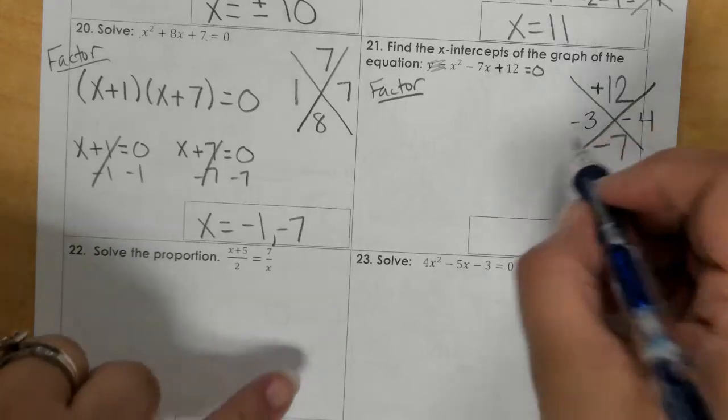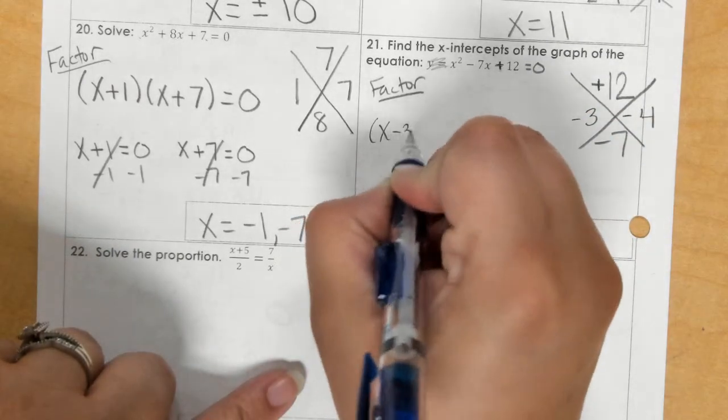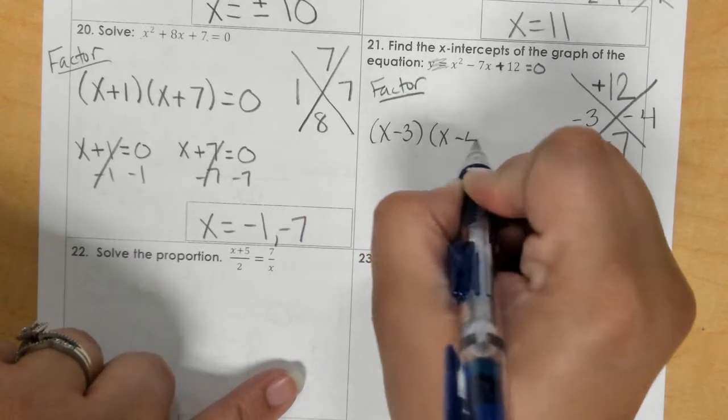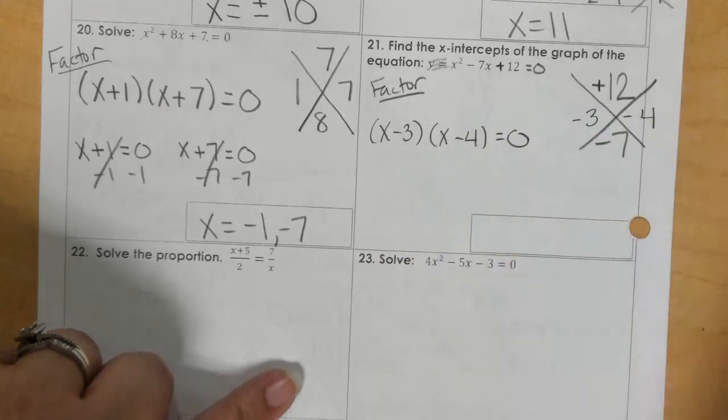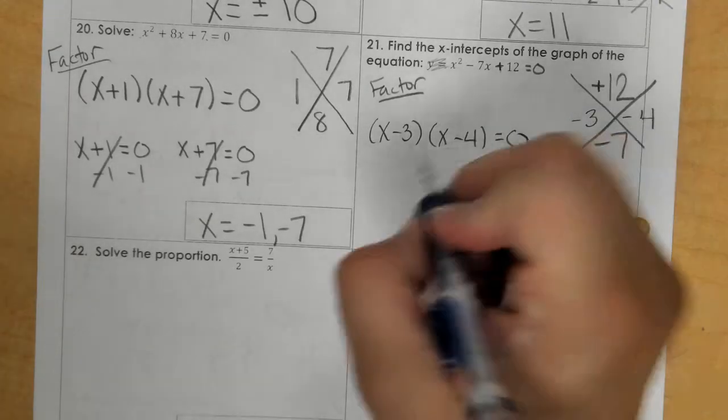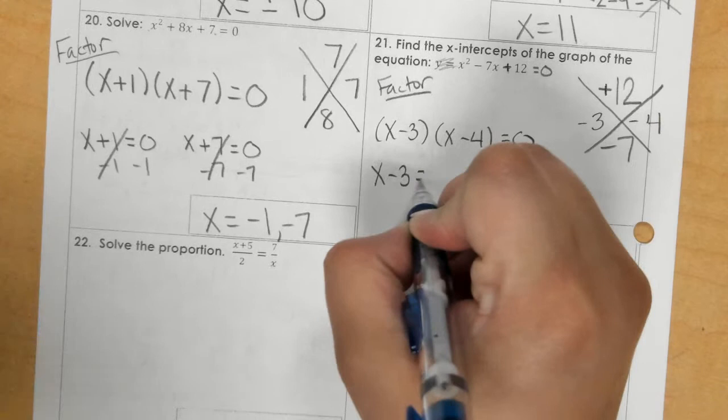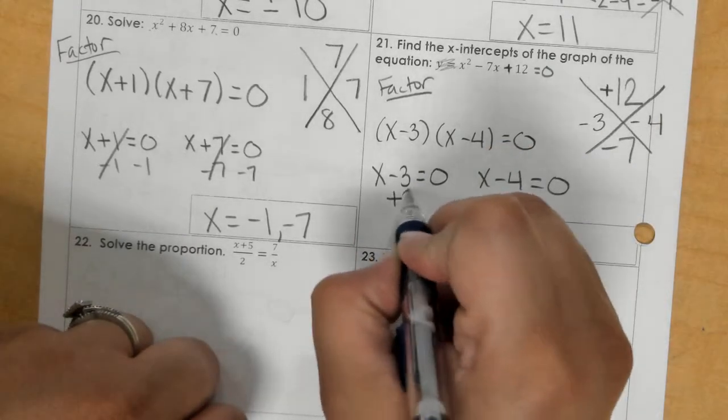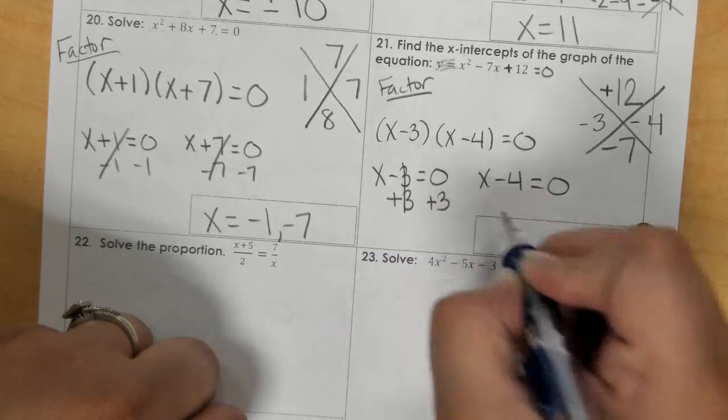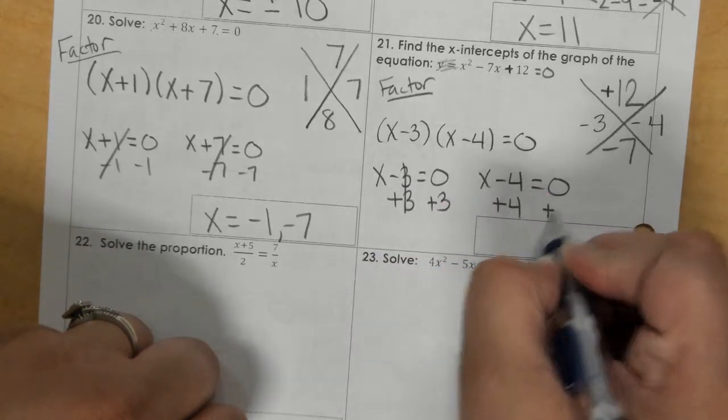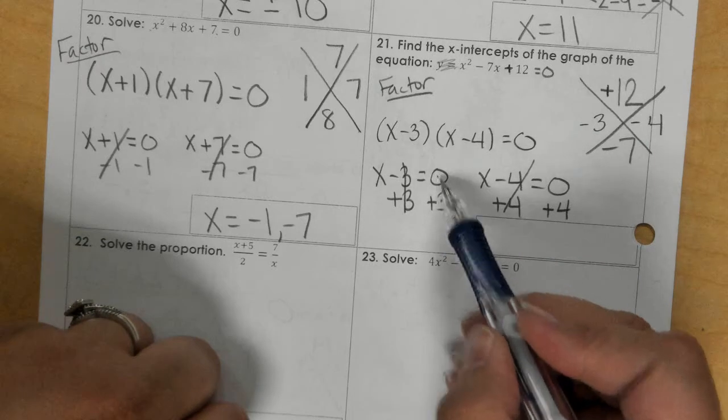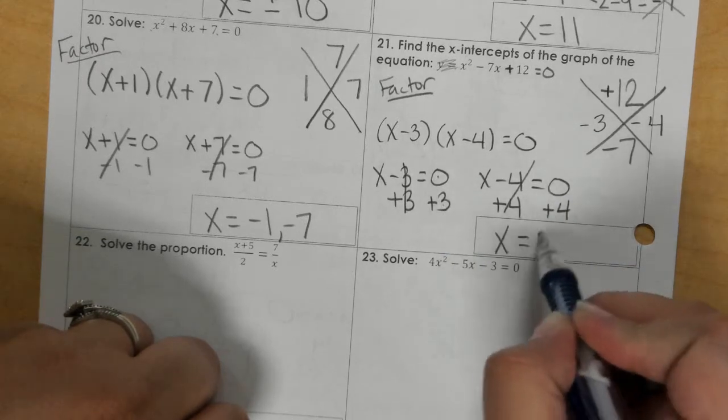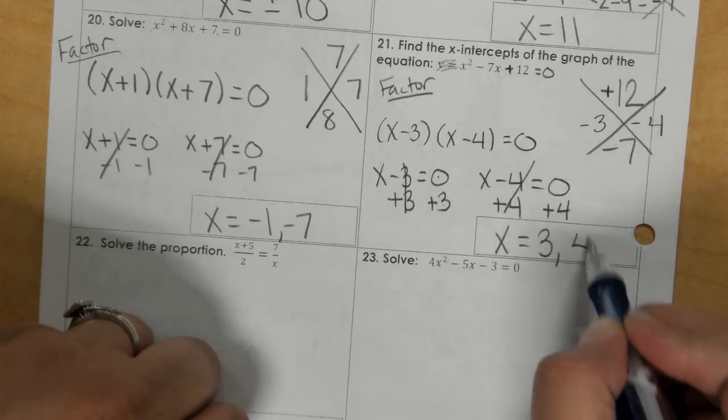So now I would have x minus 3, x minus 4 equals 0. Set each one equal to 0 and solve. So here I would add 3 and then add 4. So 0 plus 3 is 3, 0 plus 4 is 4.